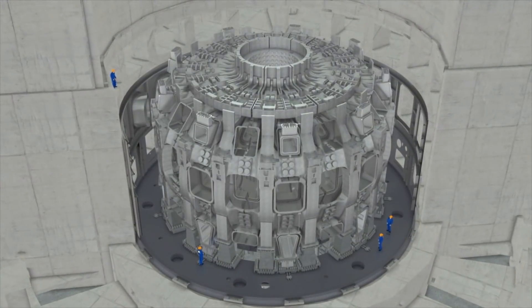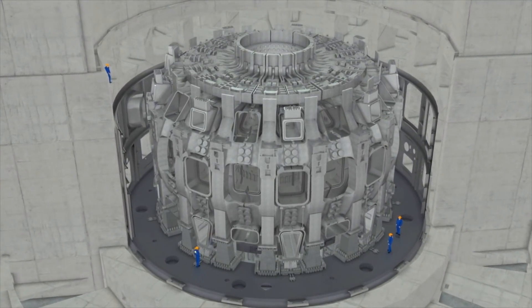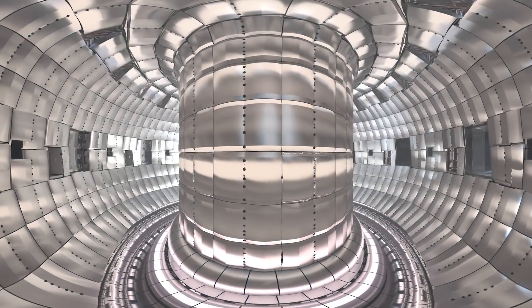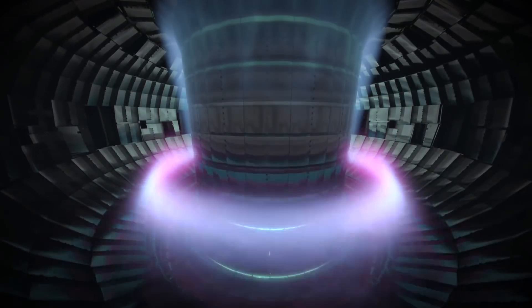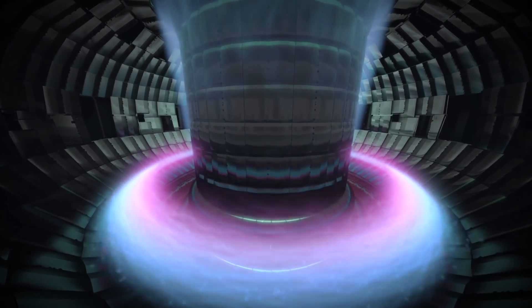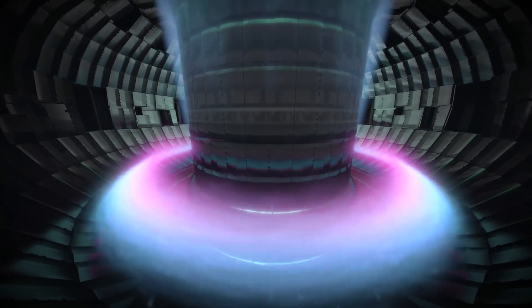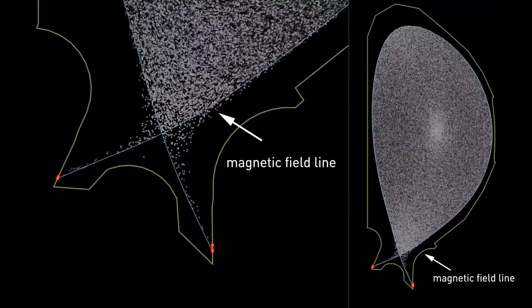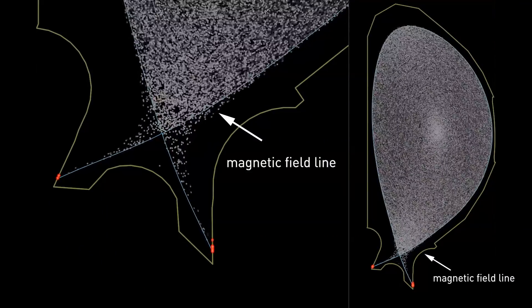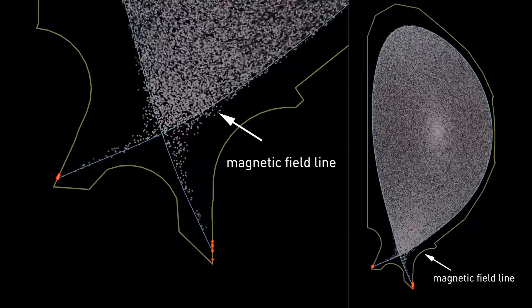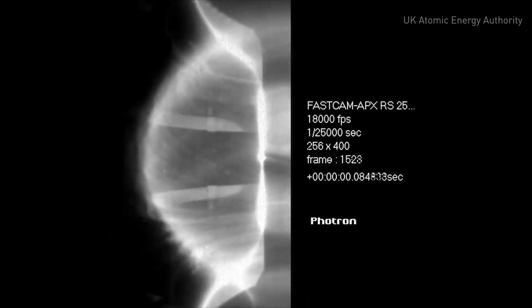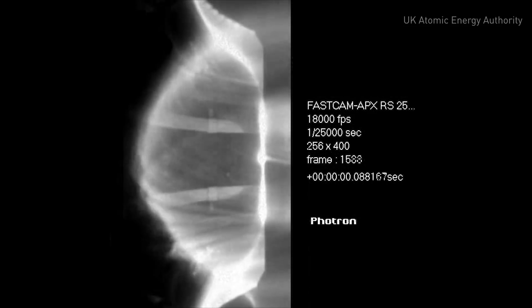Tokamak is a magnetic confinement device. We shaped magnetic field into donut shape. Ideally, plasma will follow magnetic field lines without escaping them. Then we found out that plasmas are not really contained following the magnetic field lines. We did not understand the instability and turbulence existing in tokamaks.